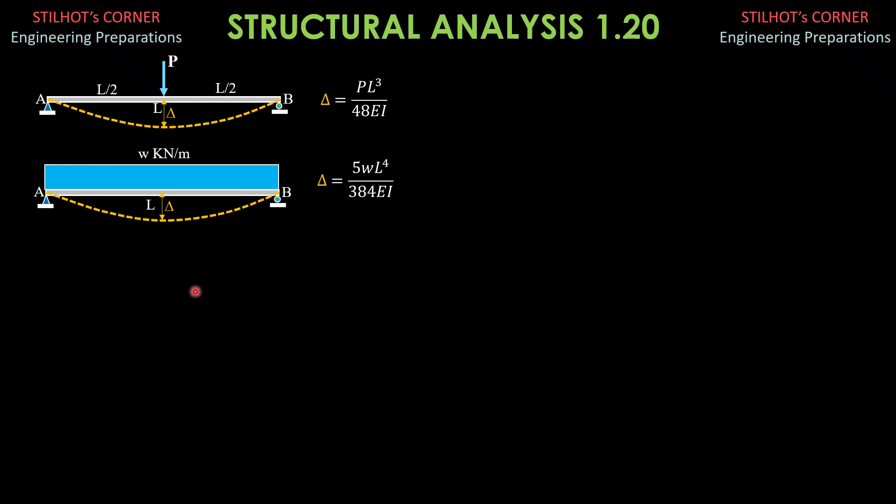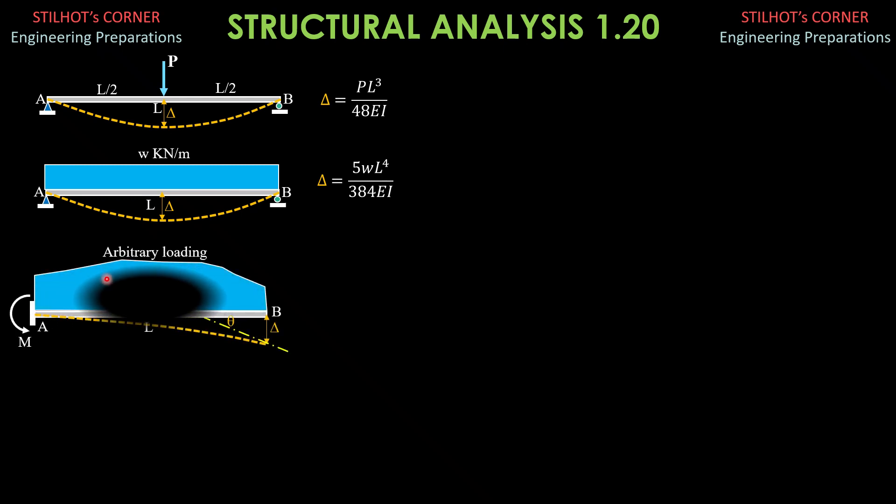Then, in general, for a cantilever beam loaded with this arbitrary loading, this will be the moment at the wall due to that loading. The general formula derived by area moment theorems is EI delta, the deflection at the end, equals moment at the wall, L squared over N plus 2, where N is the degree of the moment curve due to this loading. If you draw the moment diagram by parts, the degree of that loading is this N here.